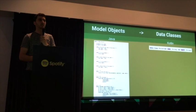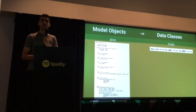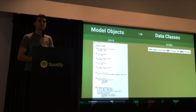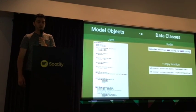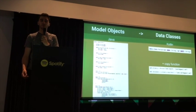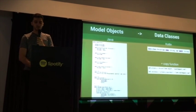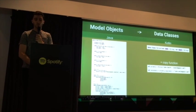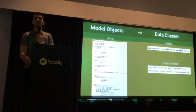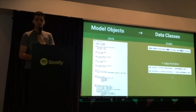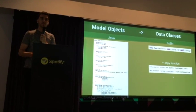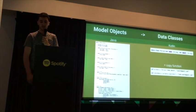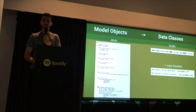We've seen in past meetups you can use things like Auto Value in Java, but it's nice that this is actually built into the language itself. The other thing you get is a copy function, which can be useful at times. Here you can see we're creating an instance of the person class and calling copy on it using Kotlin's named parameters — just saying copy the person and set the email to a new value, keeping all the old values.